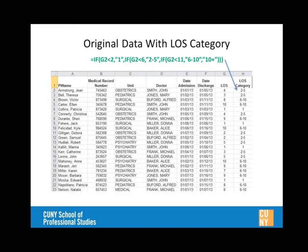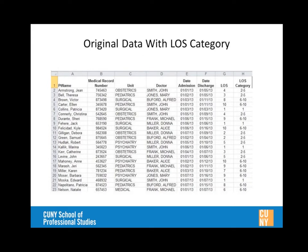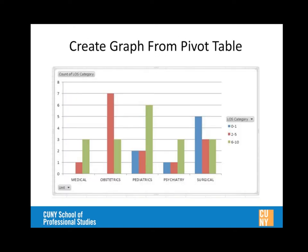The last category is always the default category. Column H shows the length of stay categorization, and the formula resides in H2. Mike then copies the IF statement formula all the way down to categorize all of the patients' data. The formula is: IF H2 is less than two, call it 'one'; otherwise if less than six, call it 'two through five'; if less than eleven, call it 'six through ten'; otherwise call it 'ten plus', closing with three parentheses.